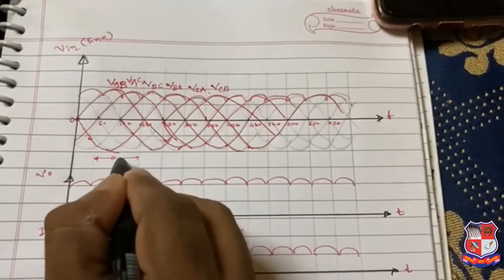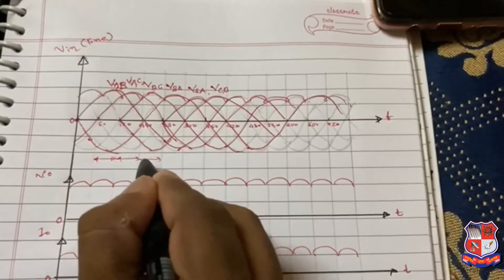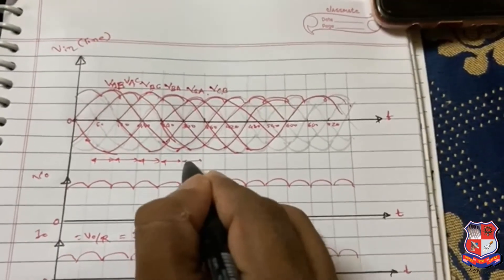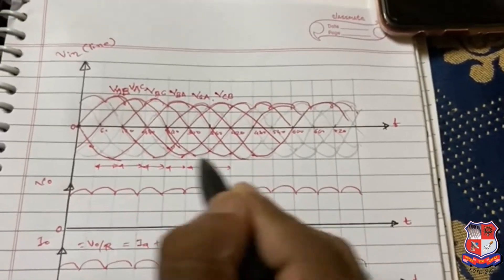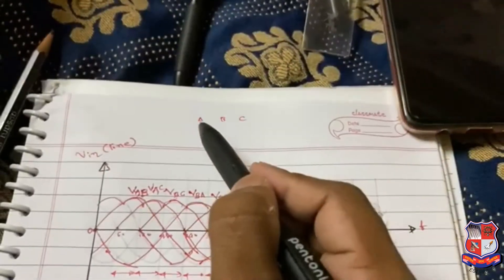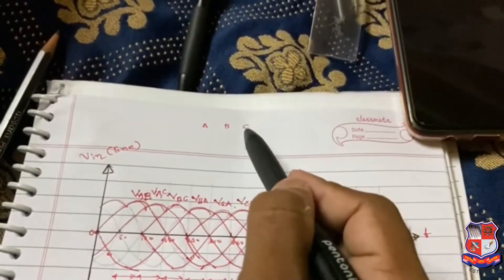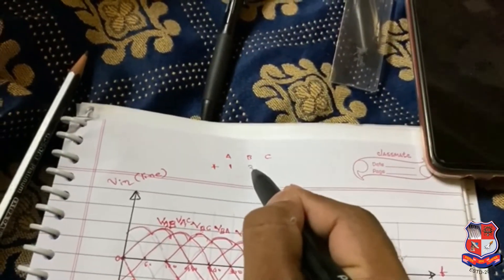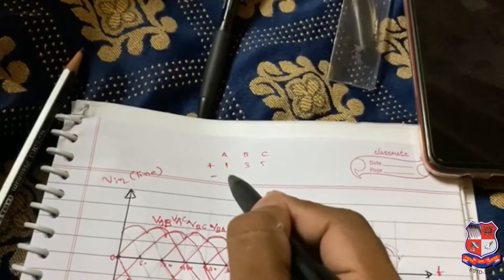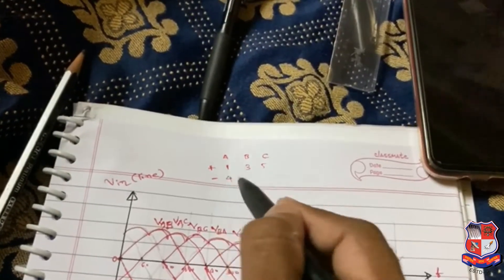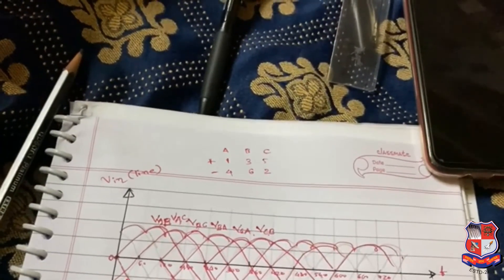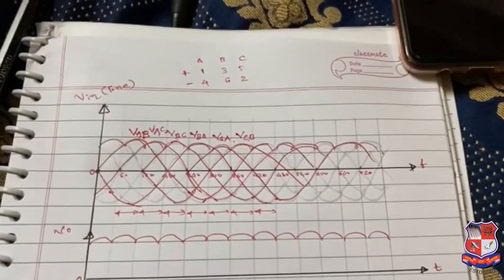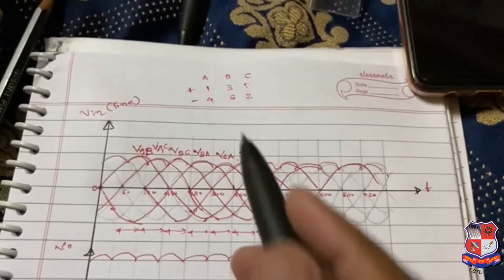Now derive the switches for particular 60 degrees. There are phase A, B, and C. Phase A positive switches are 1, 3, and 5. Negative switches are 4, 6, 2. Which switch will be on in particular period will be derived from this.